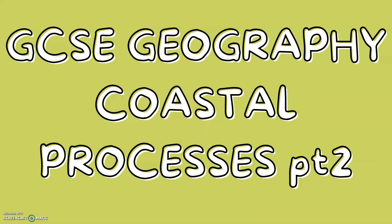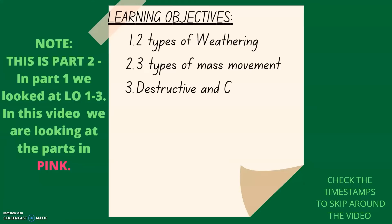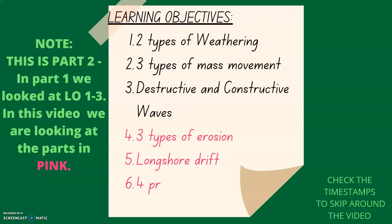Geography Coastal Processes Part 2. In this video we're going to be looking at the parts in pink. We've already looked at topics 1 to 3, and now we're going to be looking at three types of erosion, longshore drift, and four processes of transportation and deposition.